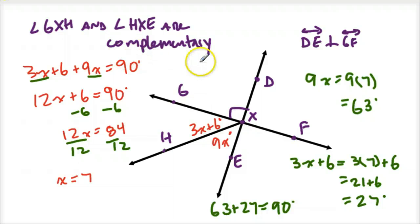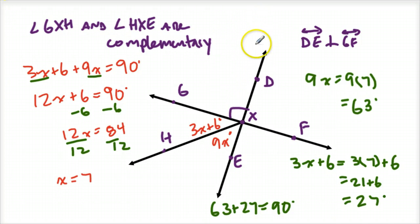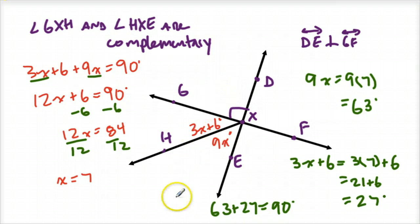These are some applications for working with perpendicular lines and the different angle relationships. When we know something's complementary, the sum adds up to 90. If it was supplementary, it would be 180. We'll also need to know what adjacent and vertical angles mean. Bring these notes to class tomorrow — we'll do some work in class as we usually do. Have a great night.